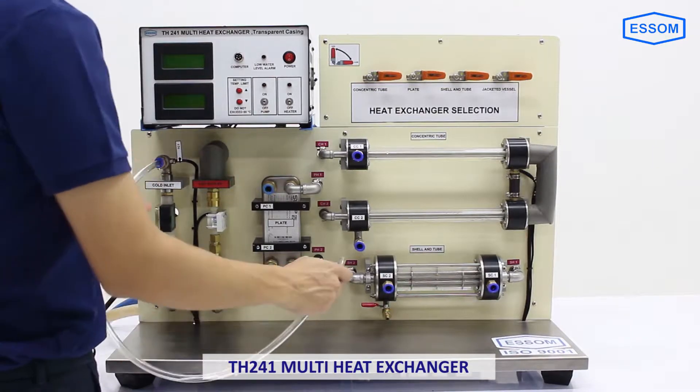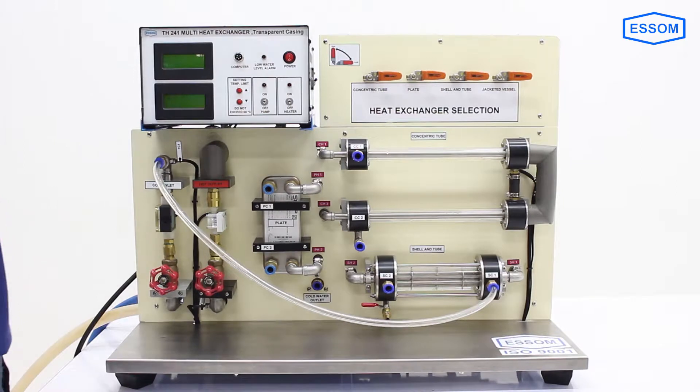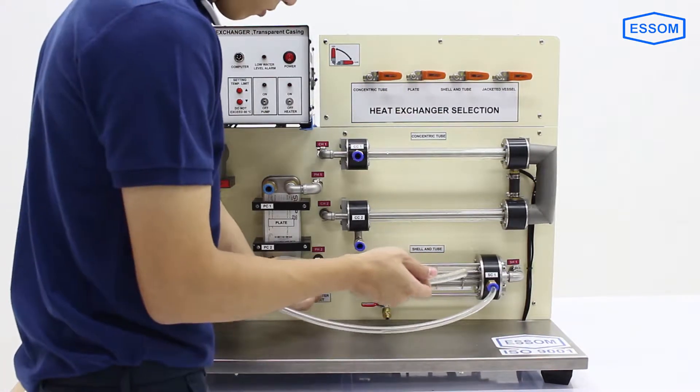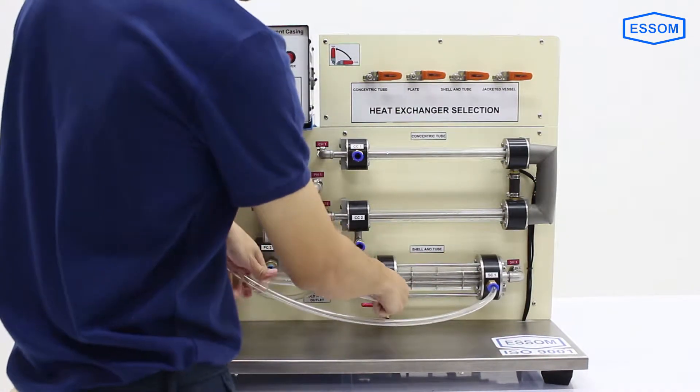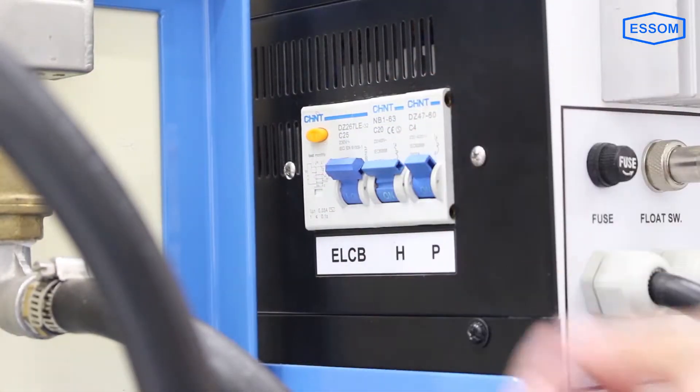SMTH241 Multi-Head Exchanger. The apparatus is used for studying three types of heat exchangers, namely concentric tube, shell and tube, and plate, under parallel or counter flow conditions.